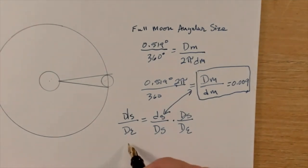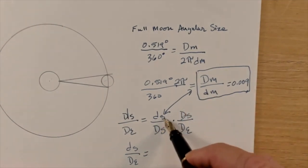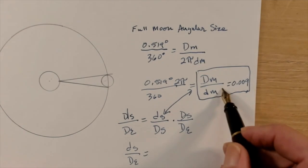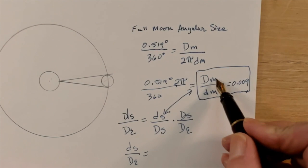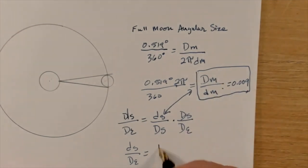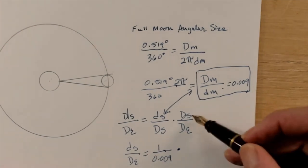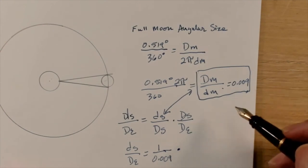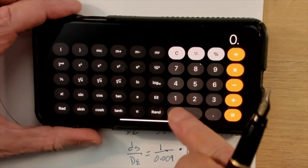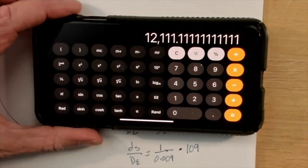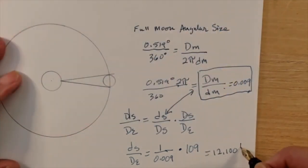The distance to the sun over the diameter of the earth is the same as the distance to the moon over the diameter of the moon, and that ratio is 0.009. However, we have the diameter on the bottom here and it's on the top here, so we have to invert this. That's going to equal 1 over 0.009 times the diameter of the sun compared to the diameter of earth, which is 109. So we end up with 109 divided by 0.009 equals 12,100 — that's the distance to the sun over the diameter of earth.